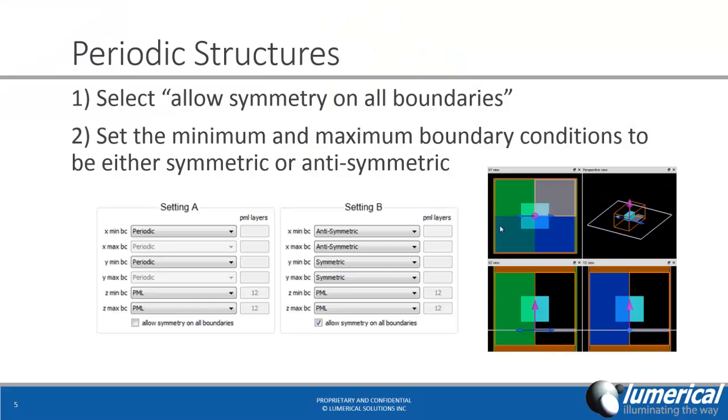For periodic structures, we need to use periodic boundaries. In this case, we can still apply symmetry by selecting allow symmetry on all boundaries, and selecting the min and the max boundary conditions to both be symmetric or anti-symmetric. So here, settings A and B are completely equivalent. The only exception is that settings B will run in a quarter of the time.